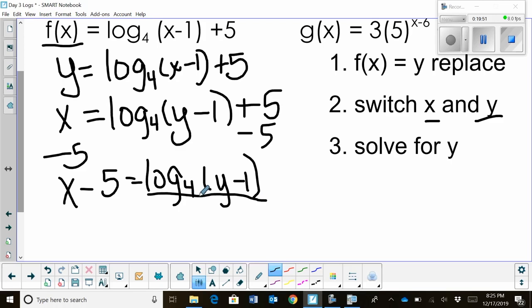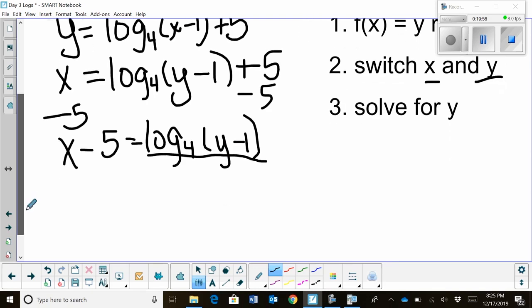Log base four of some quantity. Now I have to do the rewrite. This is when you take it from log form to exponential form. So I have to think, what's my base? Well, my base of my log is also the base of the exponent or exponential form. So it's base four. The log always equals an exponent. So the exponent is x minus five, and that's going to equal to y minus one.